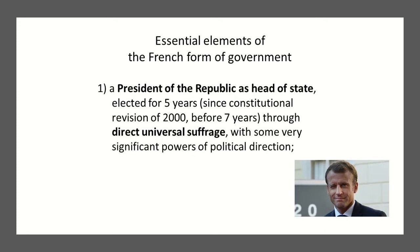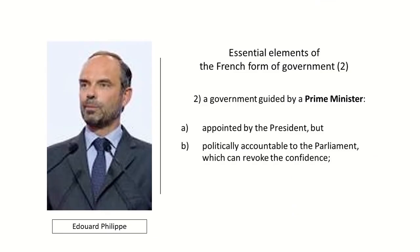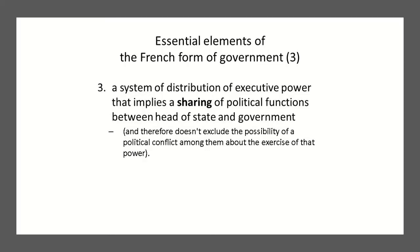The essential forms of the current French government include a president of the republic who serves as head of state. They are elected for five years — since the constitutional revision of 2000, before that it was seven years — through direct universal suffrage, with significant powers of political direction. The government is also guided by a prime minister, appointed by the president but politically accountable to the parliament, which can revoke their confidence in the prime minister.